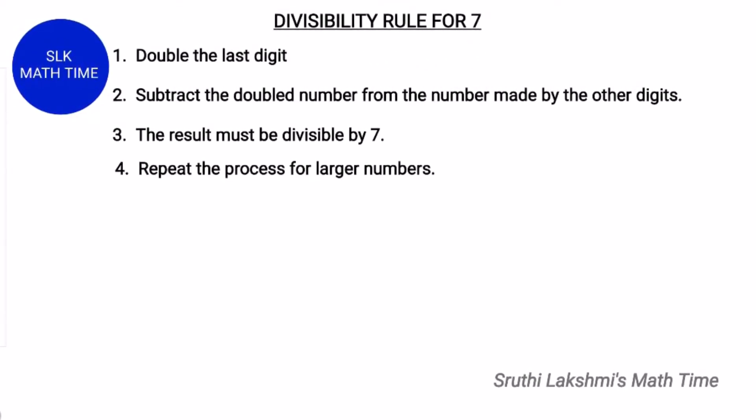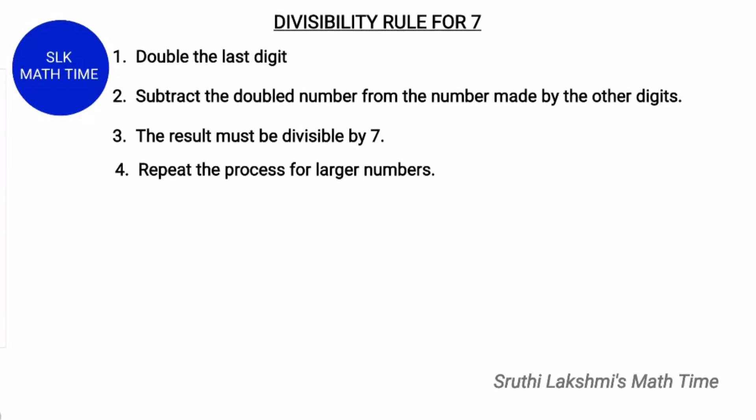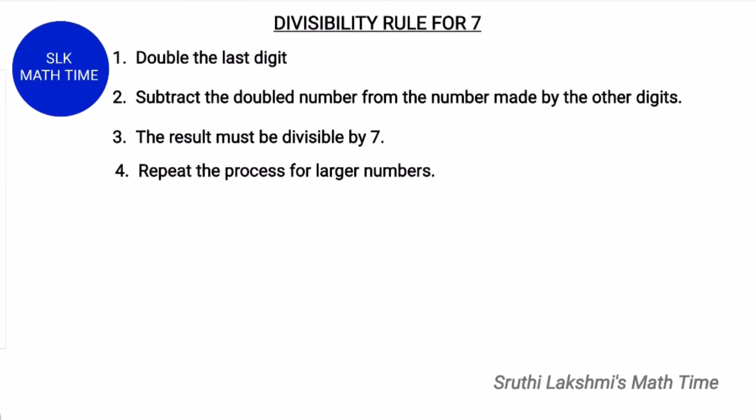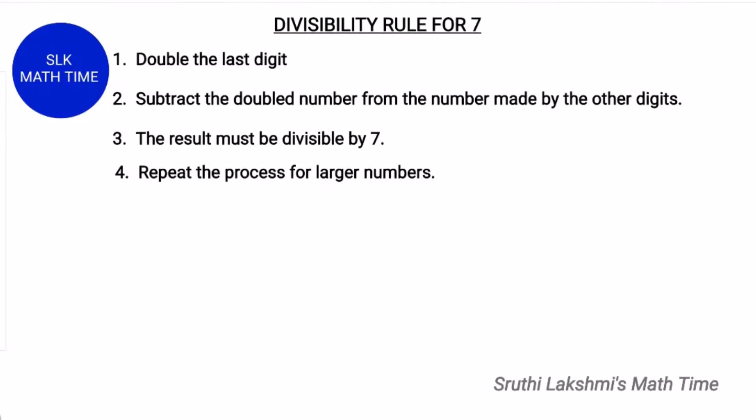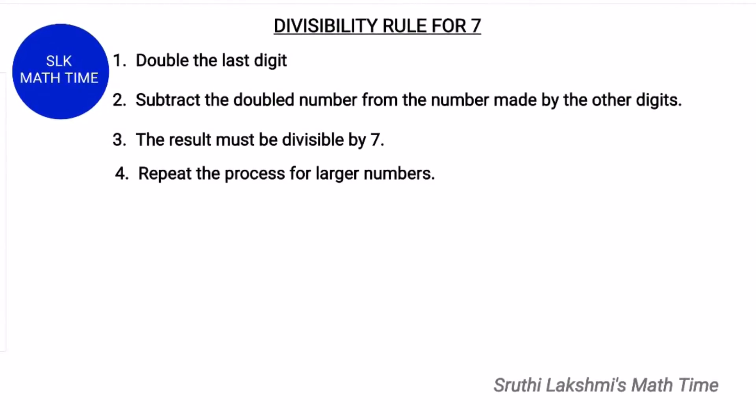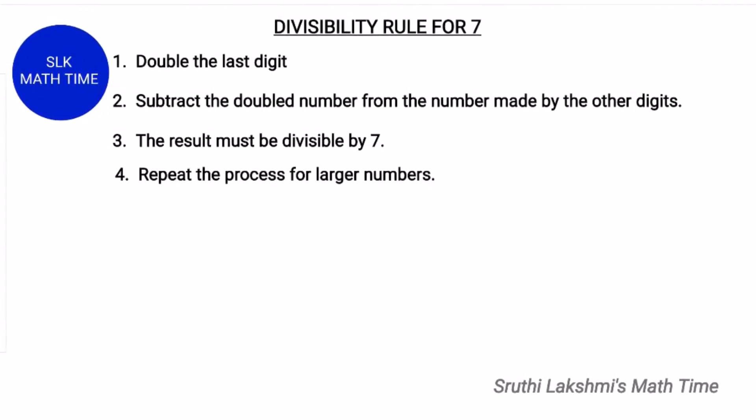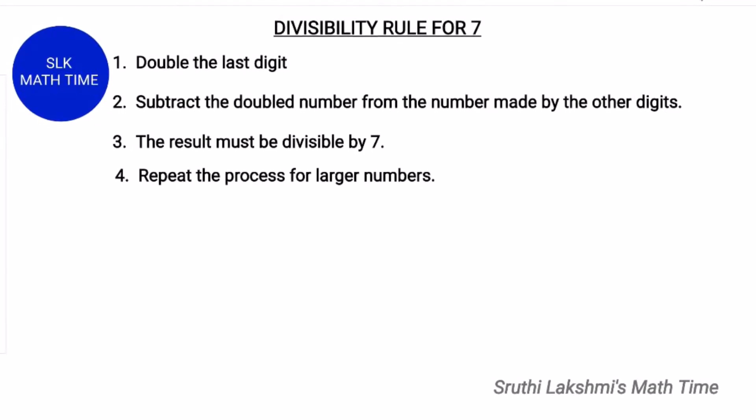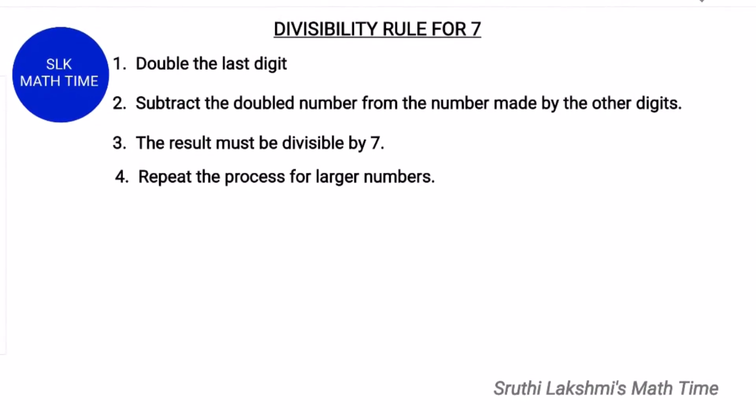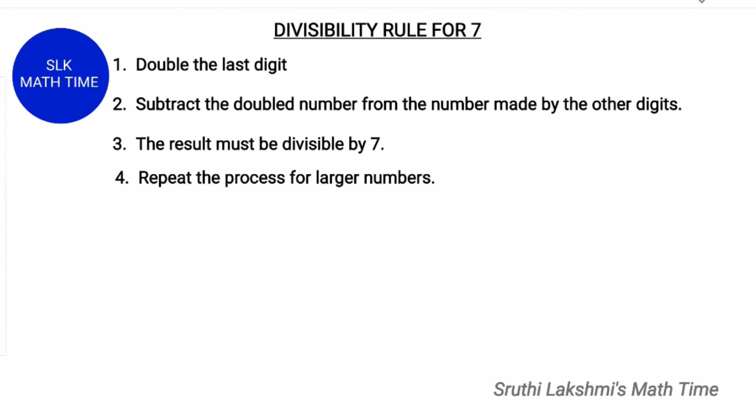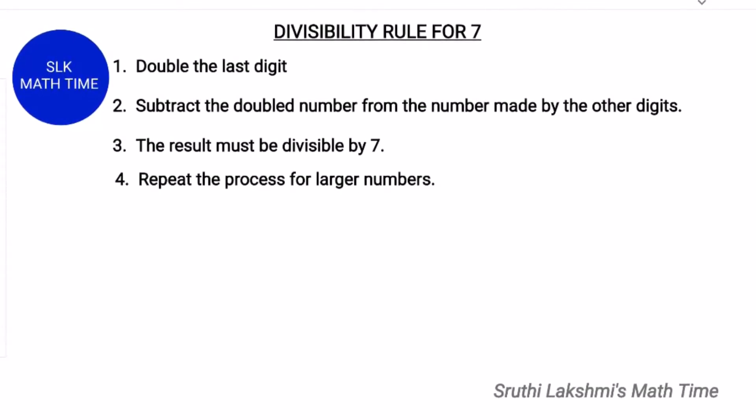First, you have to double the last digits. Next, you have to subtract the double number from the rest of the digits. Next, see if the result is divisible by seven. And if it's a larger number, repeat the process again.